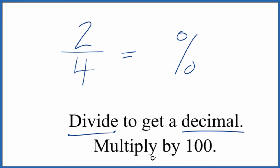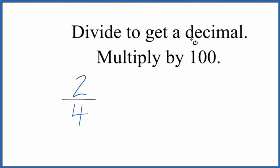That'll give us a decimal. Then we'll take that decimal, multiply it by 100, and we'll have our percentage for two-fourths. So if we divide two by four, that'll give us a decimal.